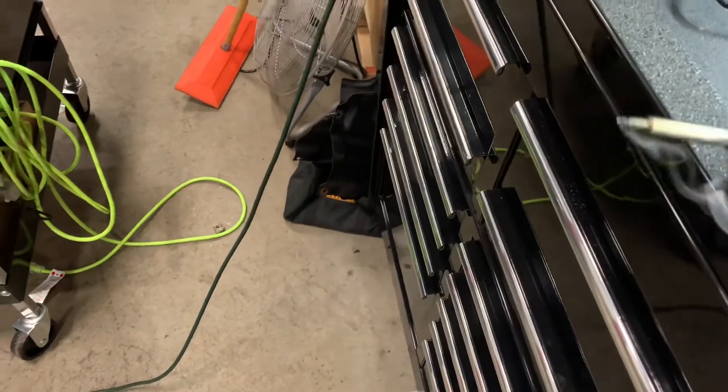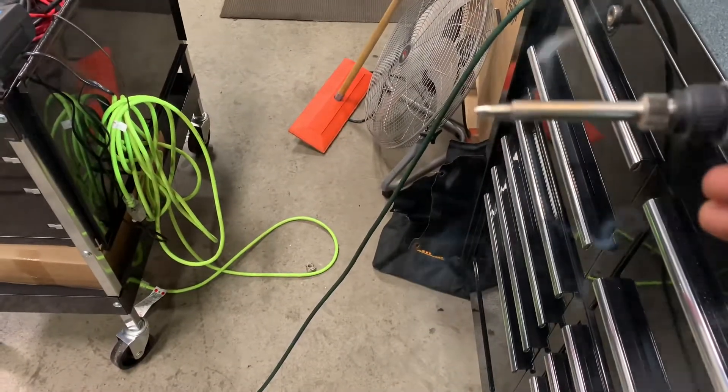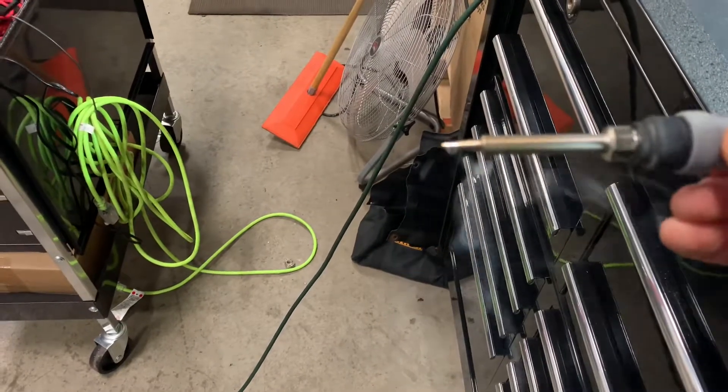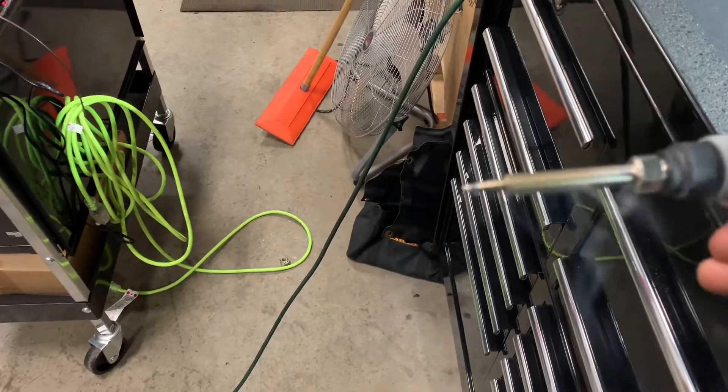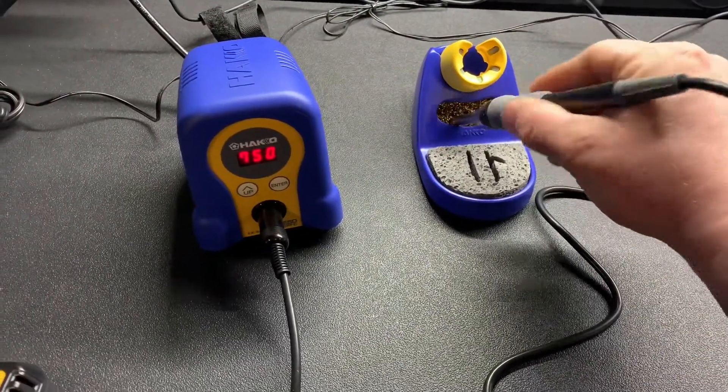As you can see we are at 750 degrees and when I clean my tips, when I first start using them, you make sure that they are tinned. But then also when I go to put them away I will melt some solder on it just like that, shake off the extra, come over here, give it a little bit of a clean.